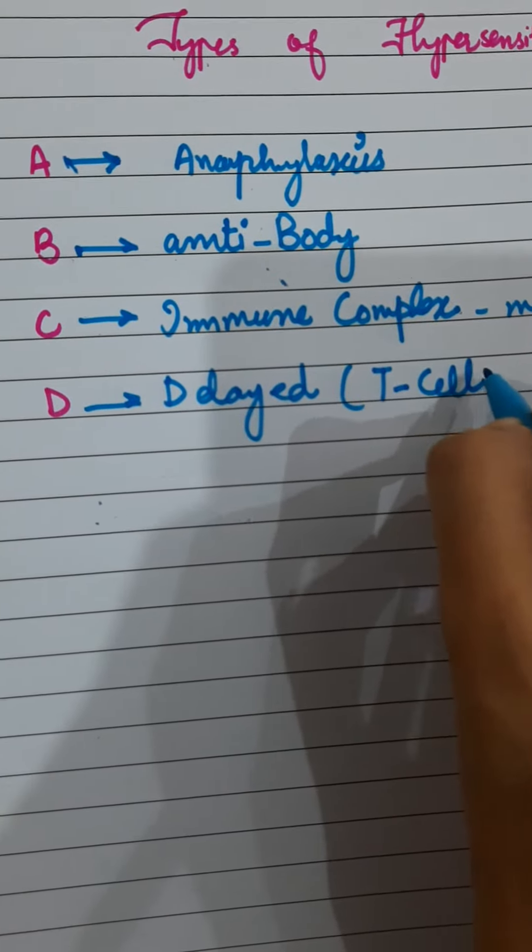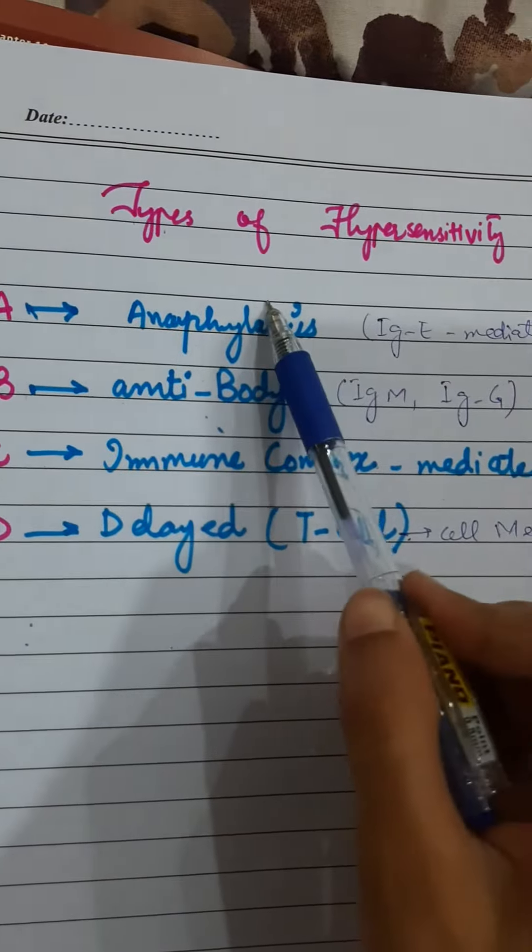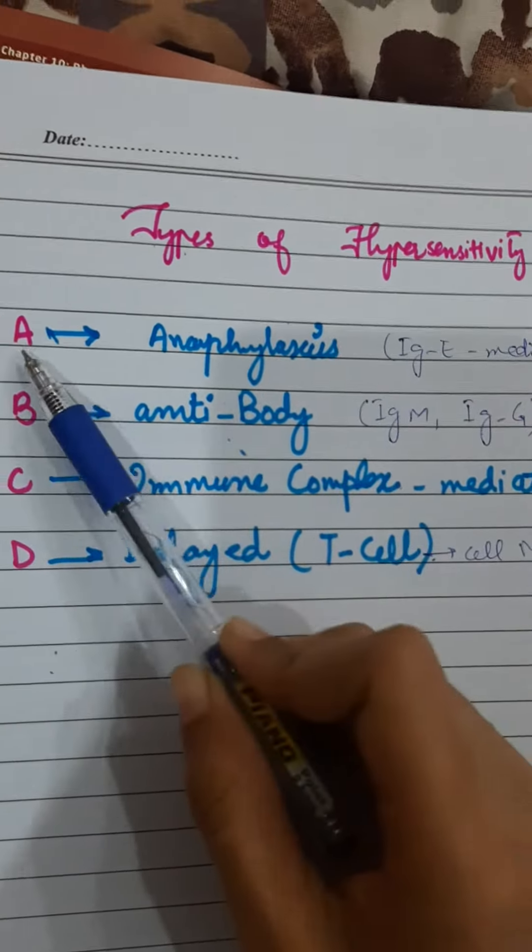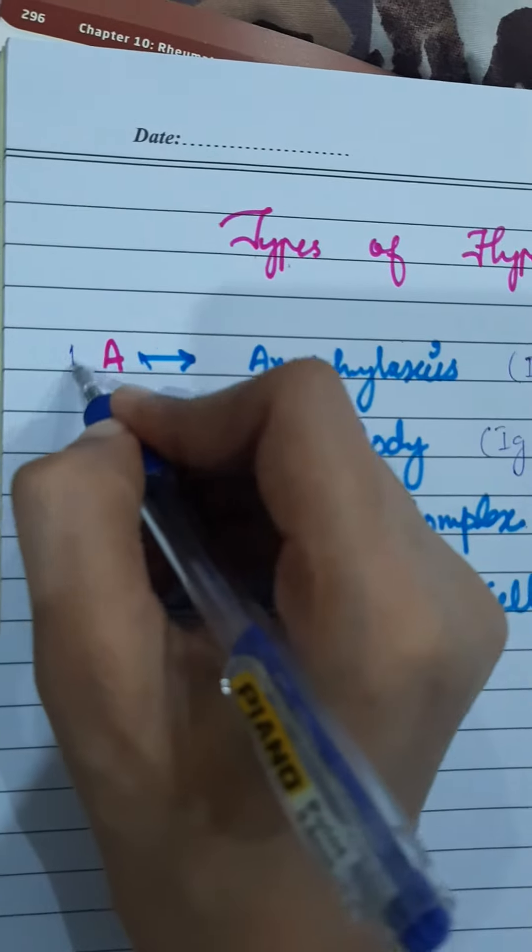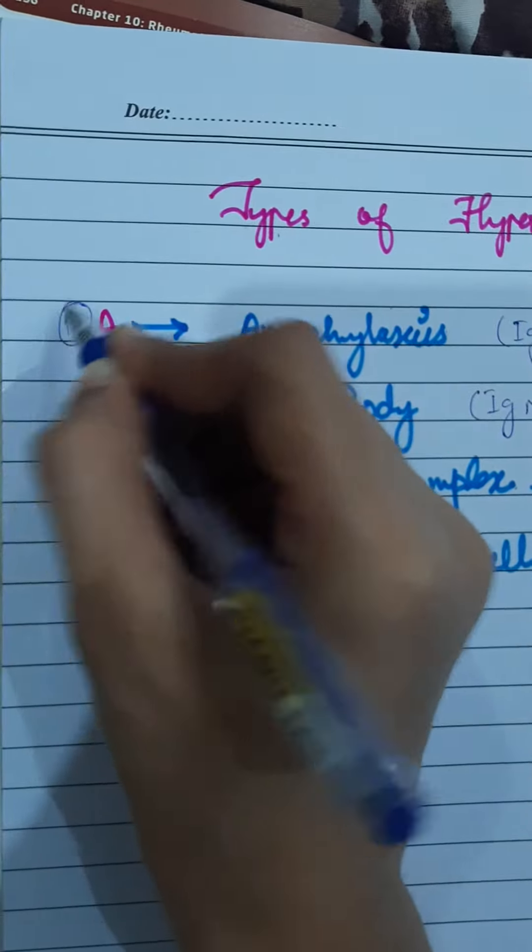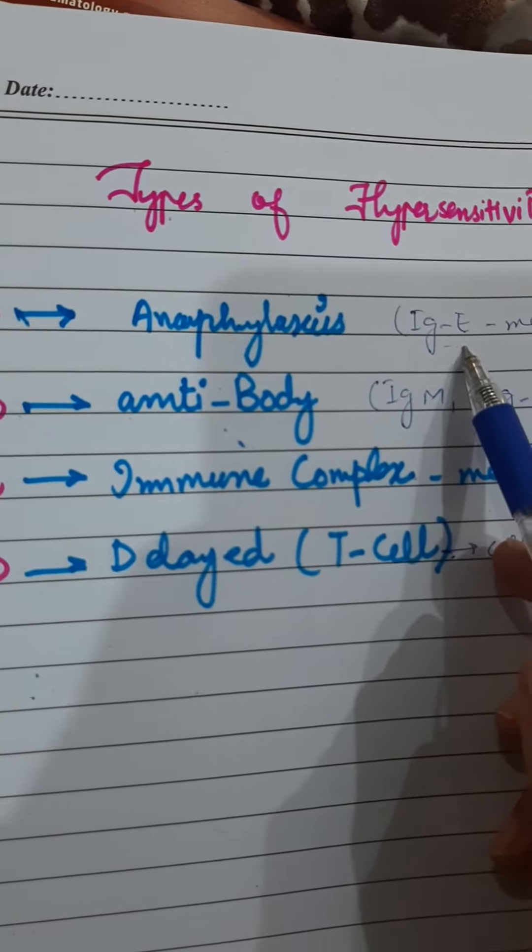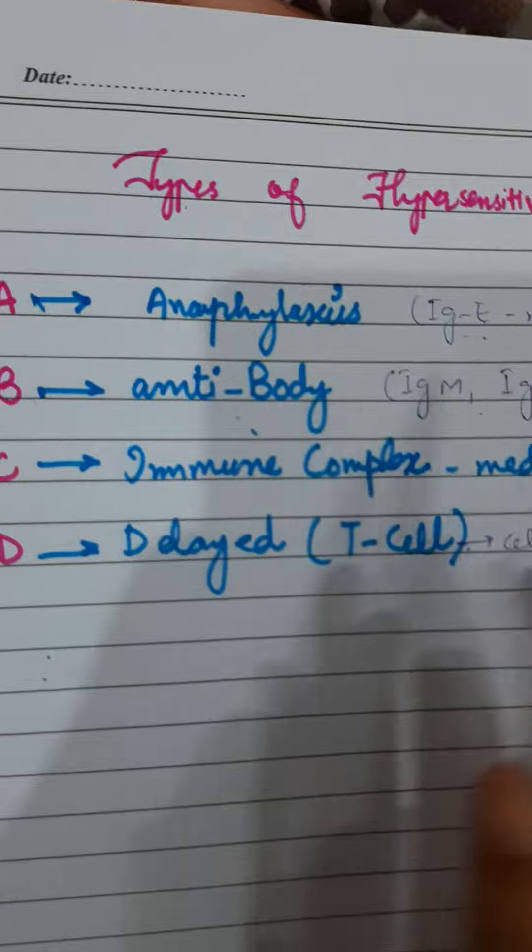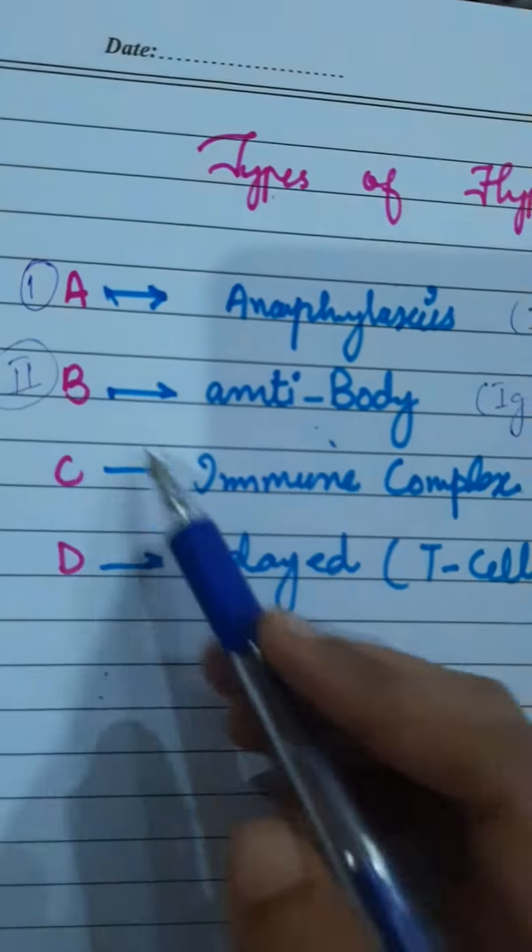By T cell. So A is used for the anaphylaxis reaction, that is IgE mediated type 1 hypersensitivity. It is type 1 hypersensitivity reaction and it occurs generally in anaphylaxis reactions and allergic reactions. Type 2, B antibody, which is mediated by IgM and IgG.